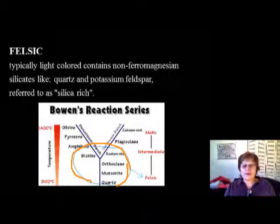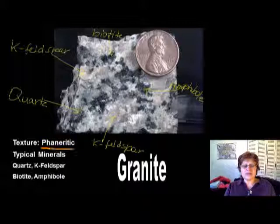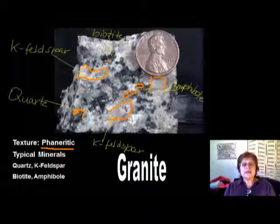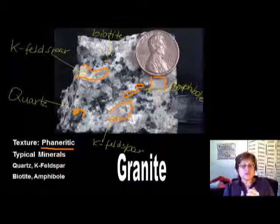We start with the intrusive version. Intrusive versions always have phaneritic texture — remember, phaneritic texture means you can actually see the minerals with your naked eye. You can tell this is biotite, this pinkish is the K-feldspar, the grayish is quartz, some sodium plagioclase, more biotite, lot of quartz. In the case of granite, because it's intrusive, you're going to be able to identify each mineral. It has a lot of quartz, K-feldspar, some biotite and amphibole. The texture is phaneritic and the name is granite.